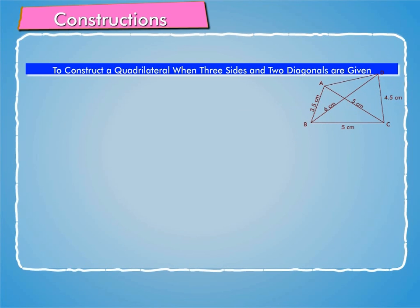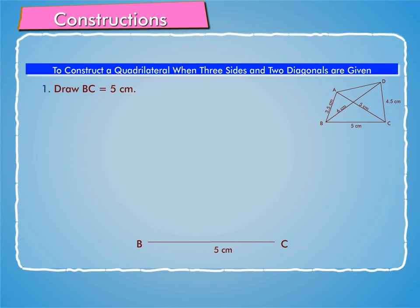To construct this, we follow these steps. Step 1: Draw BC equal to 5 cm.